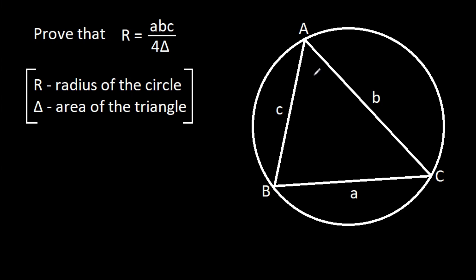In this video, we have been given a triangle ABC inside a circle, where BC is a, AC is b, and AB is c. We have to prove that R is equal to abc divided by 4 delta.